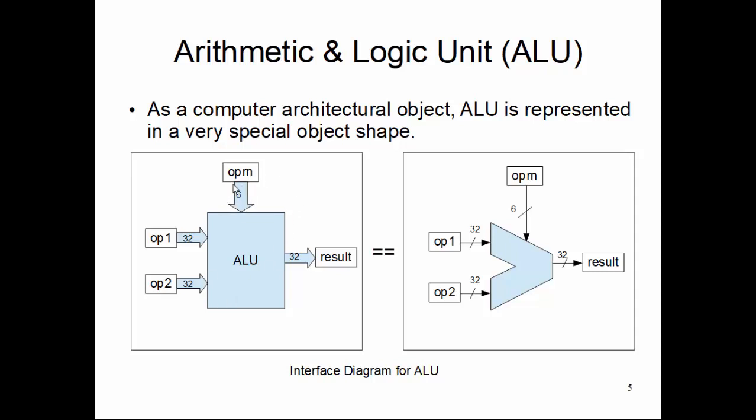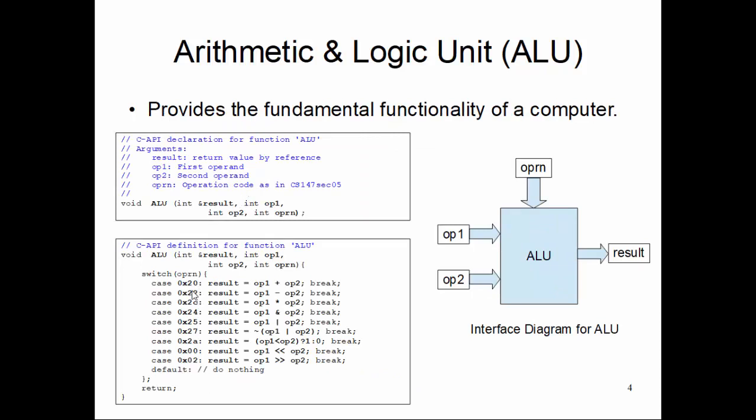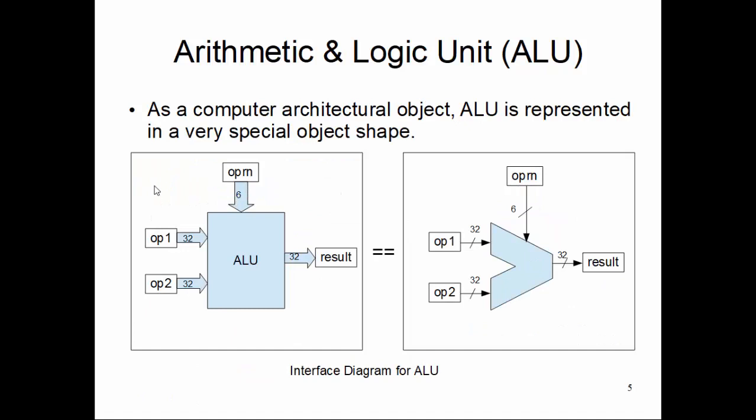The operation code is 6 bits. Why is it not 32 bits? Because we don't need 32 bits. We have only a handful of operation codes - nine different values we want to represent. Once we know about number systems, we'll see 6 bits is more than sufficient to represent these nine different values. That's why we use 6 bits. The result is 32 bits.